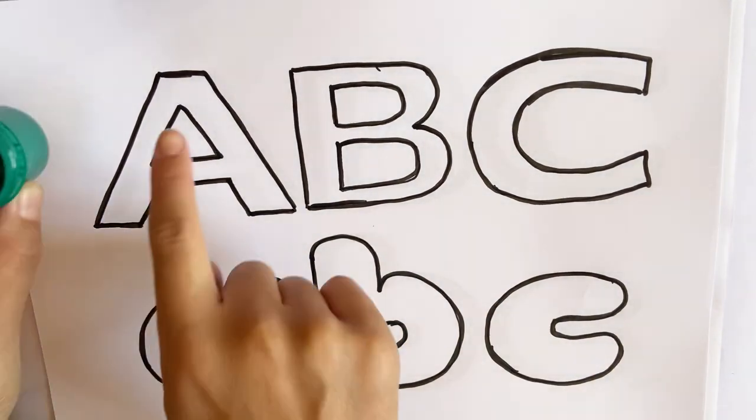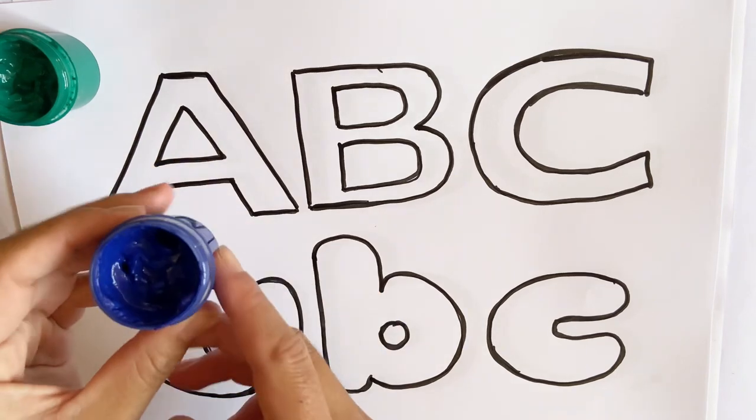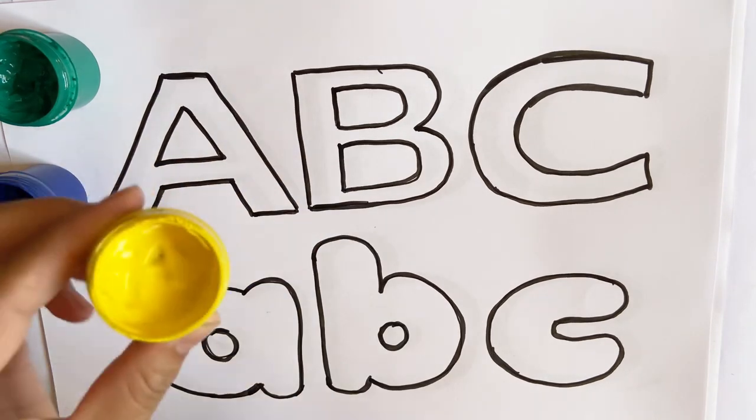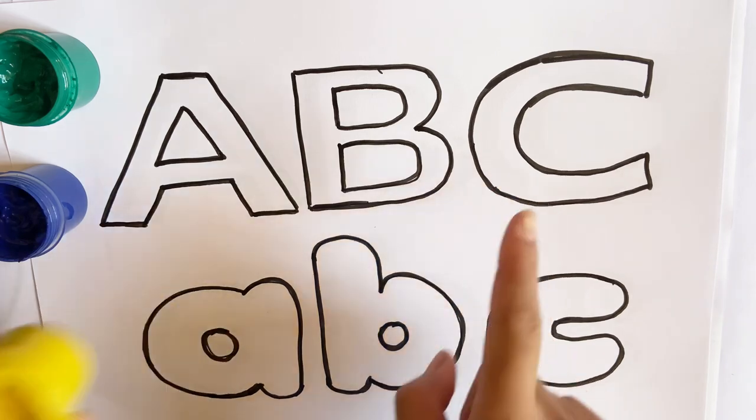Color the letter A green. Let's color the letter B blue. Color the letter C yellow.